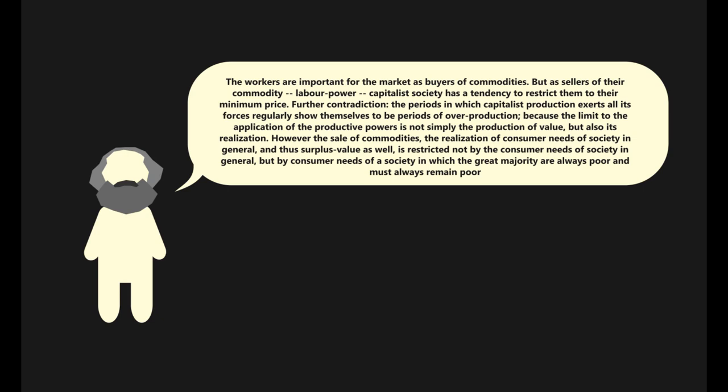Further contradiction: the periods in which capitalist production exerts all its forces regularly show themselves to be periods of overproduction, because the limit to productive powers is not simply the production of value, but also its realization. However, the sale of commodities and realization of surplus value is restricted not by society's consumer needs in general, but by the needs of a society in which the great majority are always poor and must always remain poor.